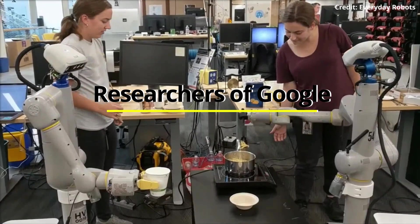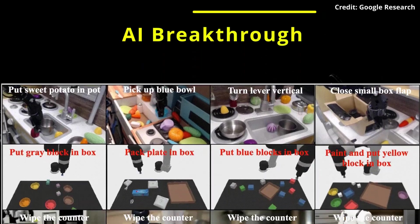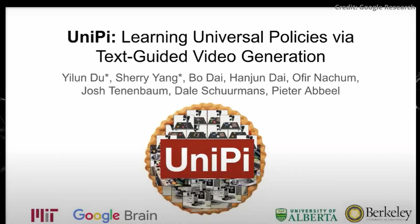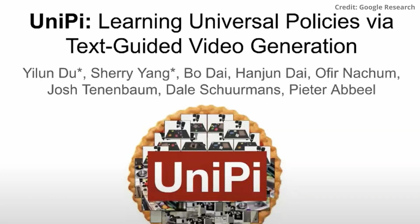Impressively, researchers at Google have just unveiled their latest artificial intelligence breakthrough called UniPi, a universal policy model that's powered by text-guided video generation.